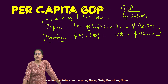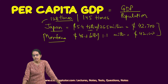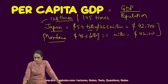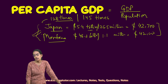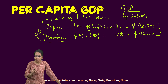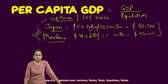So we understand the per capita GDP for both regions is the same. Both regions enjoy the same standards of living, despite the fact that Japan's population is 128 times and the GDP generated is 145 times that of Montana. Before we proceed to the limitations of GDP, let's understand a very important concept.